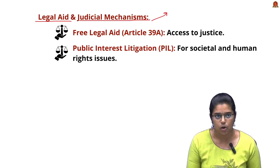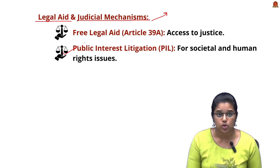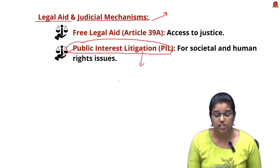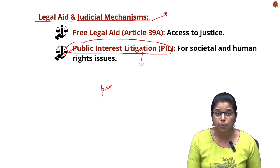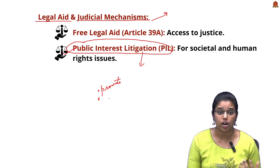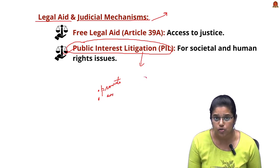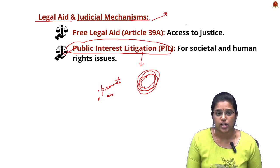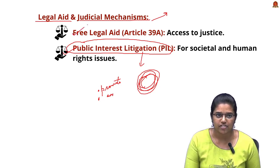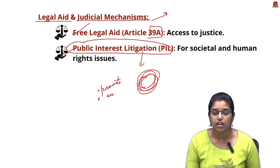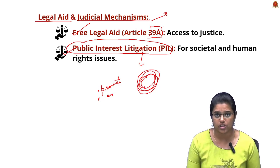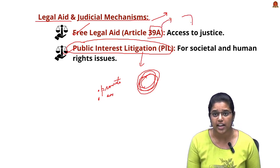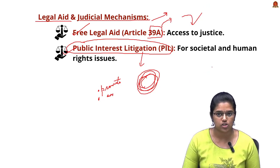Legal aid and judicial mechanisms for social justice include: Public Interest Litigation (PIL), which can be filed by any individual — whether directly affected or not — to promote public interest and ensure social justice for vulnerable groups. Many PILs are filed by social activists to ensure human rights. We also have free legal aid under Article 39A, where poor people who cannot afford legal services can use this provision to gain access to justice.